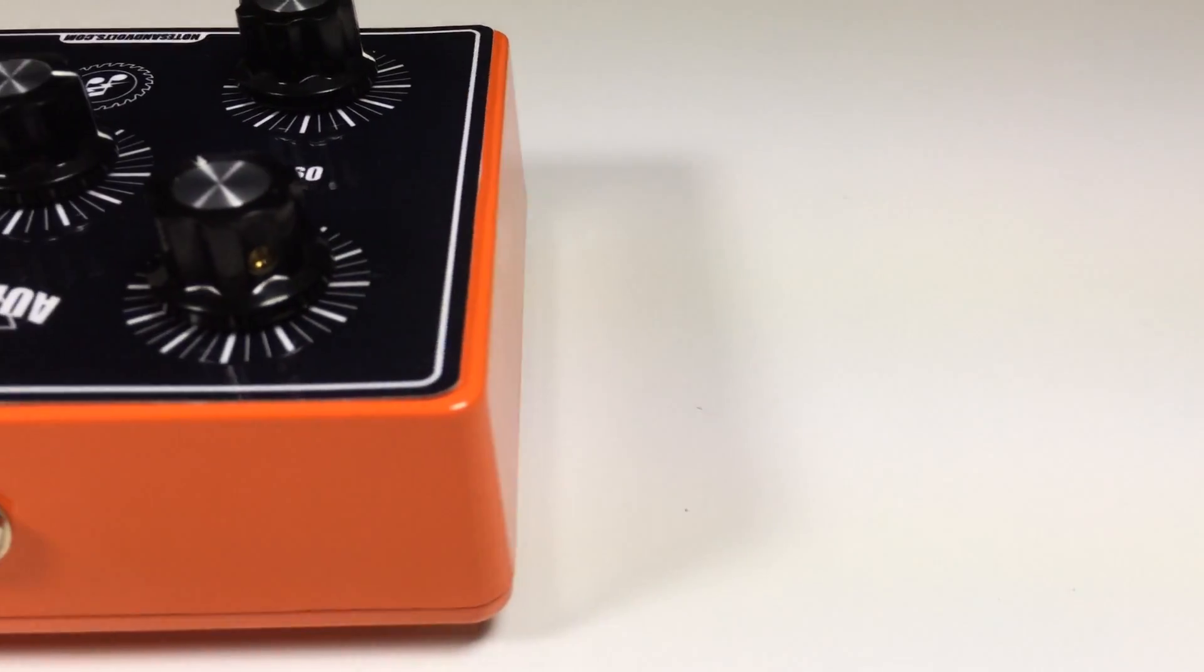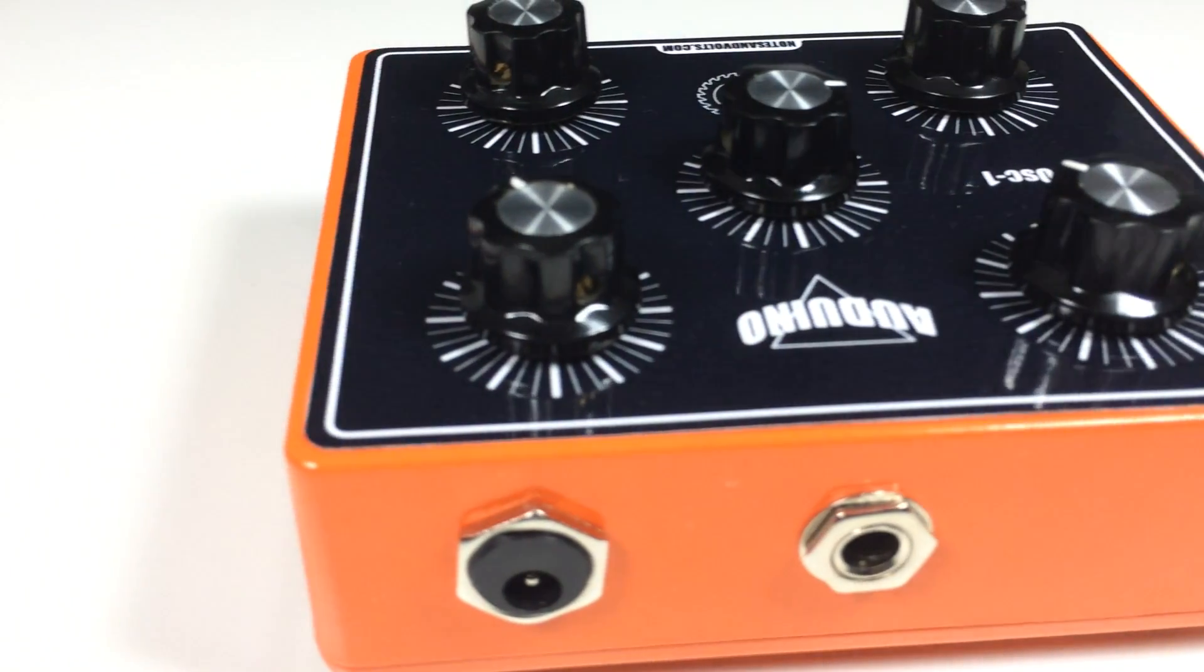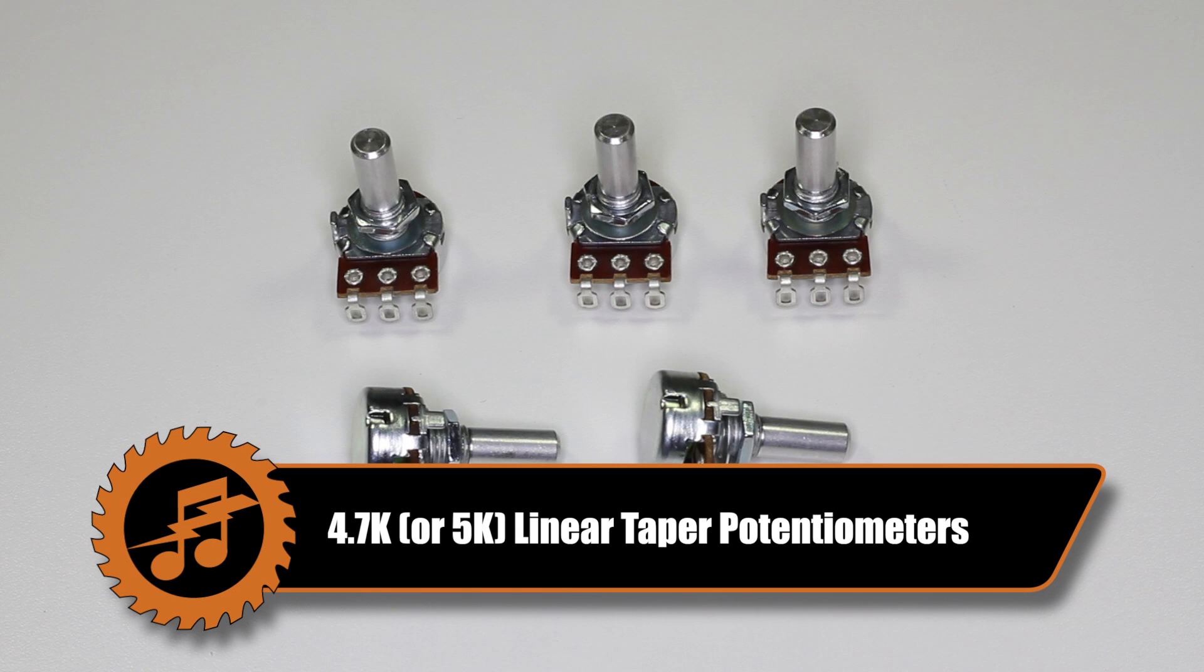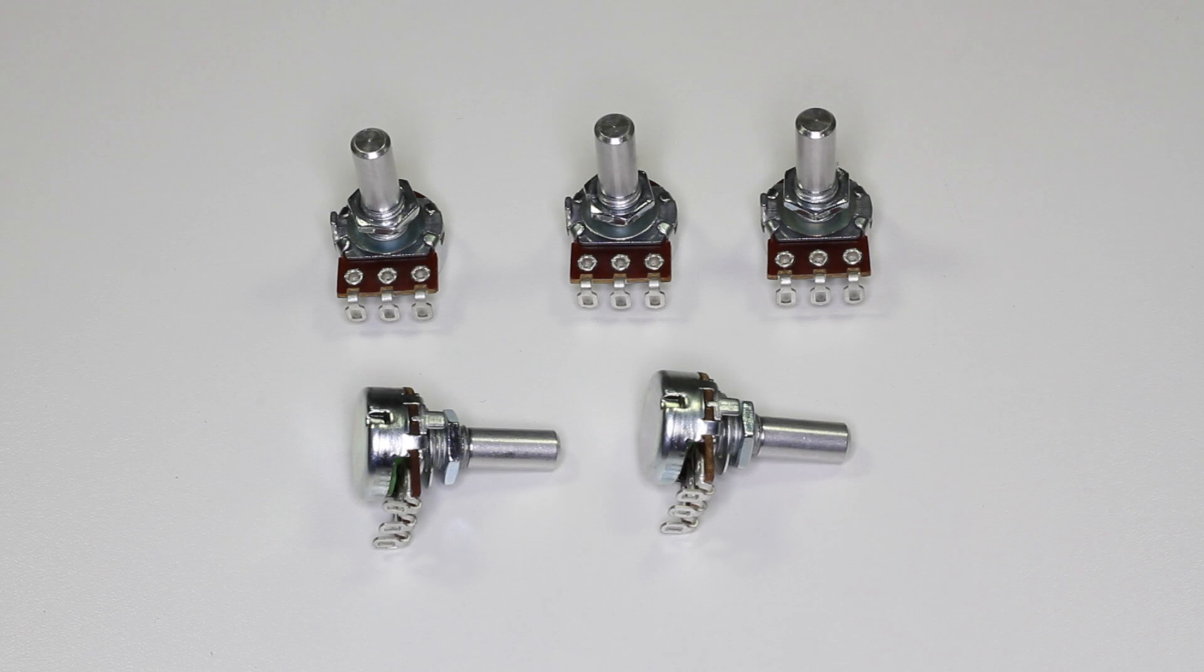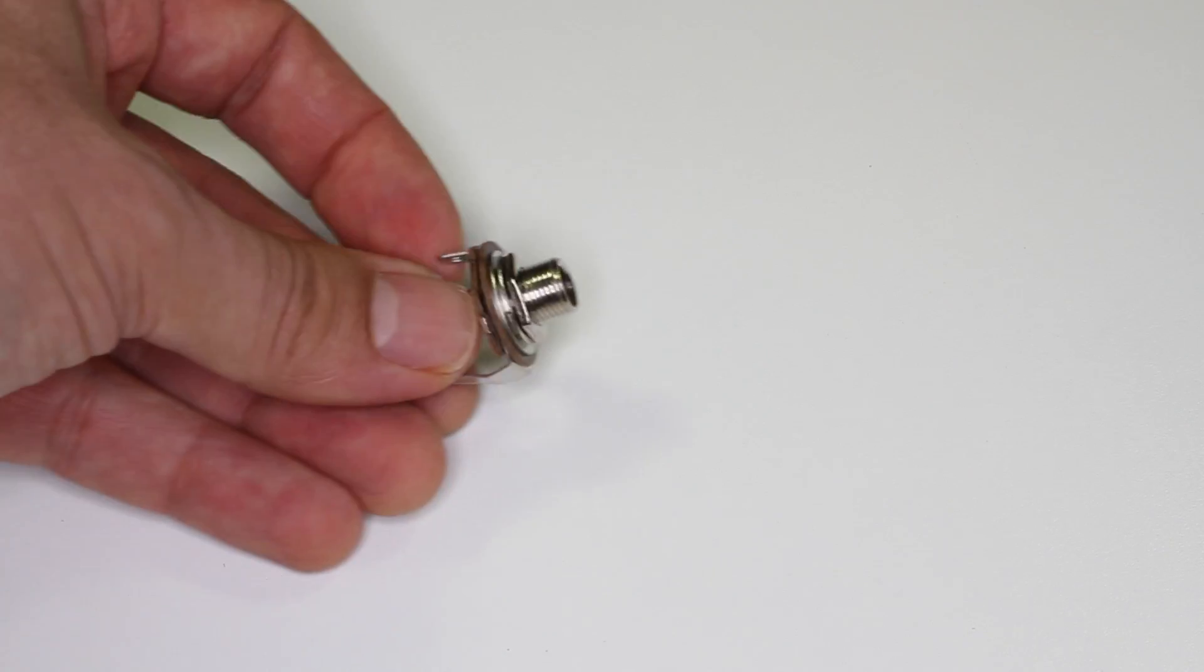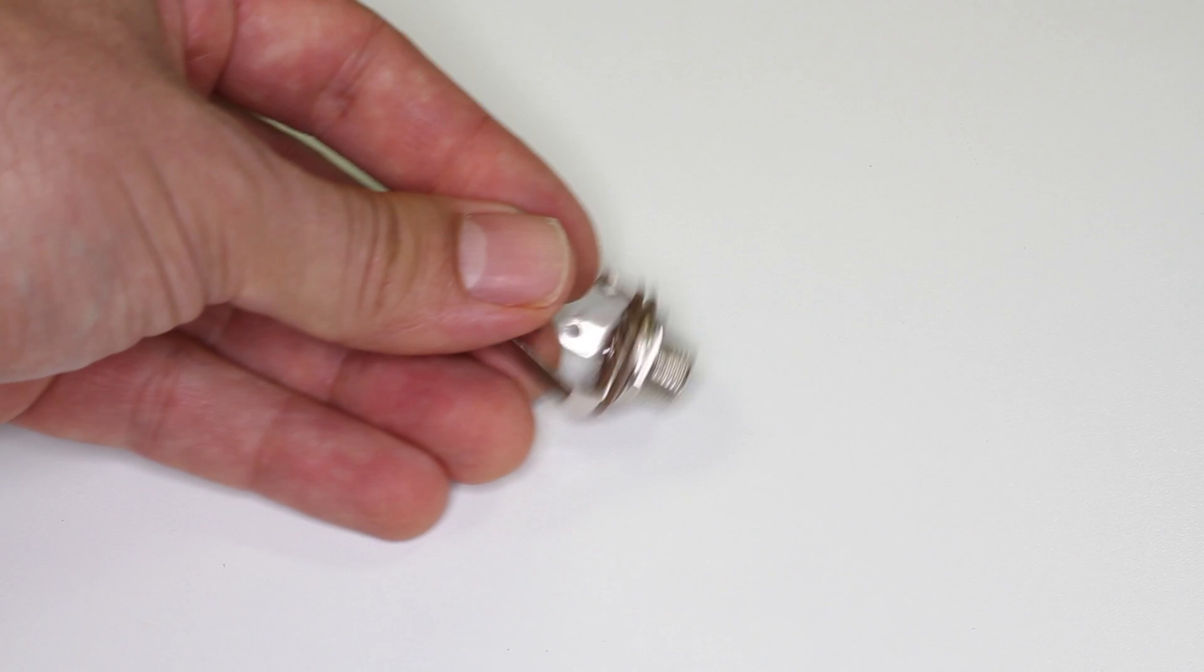For the next part of the project, here are some additional parts you'll need. Five potentiometers rated at 4.7 kilo-ohms. Make sure they're linear taper, not audio taper. Five control knobs. Make sure they're sized to fit the potentiometers you bought. And a quarter-inch mono phone jack.